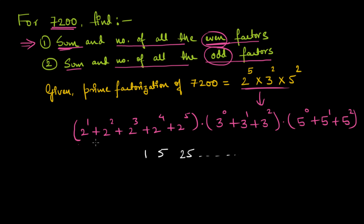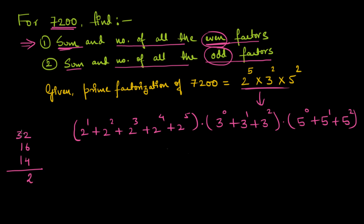Now I have (2¹ + 2² + 2³ + 2⁴ + 2⁵) multiplied by (3⁰ + 3¹ + 3²) multiplied by (5⁰ + 5¹ + 5²). Every resulting term will have at least one factor of 2, so this gives the sum of all even factors. Computing: 32 + 16 + 8 + 4 + 2 = 62. The second bracket: 1 + 3 + 9 = 13. The third bracket: 1 + 5 + 25 = 31.